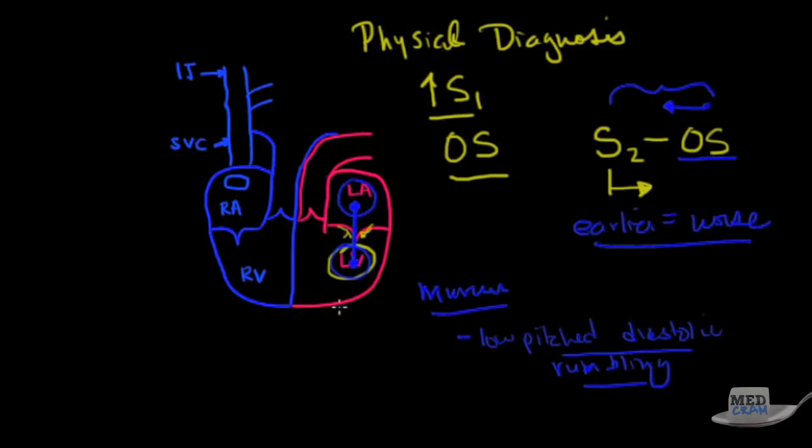What is going to make this larger? Anything that increases the amount of blood on the left side of the heart is going to make this bigger. So on exhalation, that's going to do it. So on exhalation, you have a shift of the septum going to the left. The right side becomes bigger. The left side becomes smaller. So exhalation is going to make the sound larger.